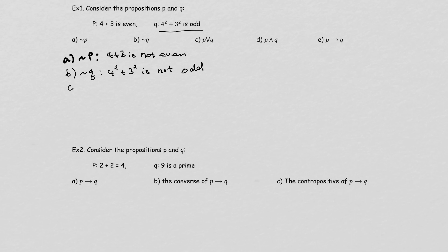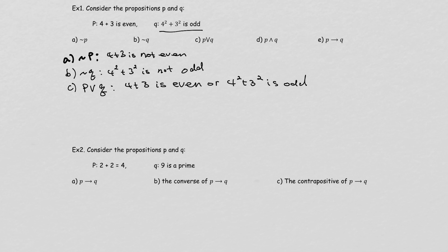What about P or Q? It means '4 plus 3 is even, or 4 squared plus 3 squared is odd.' Well, Q is true. Remember the table — the 'or' statement is true in everything except when both statements are false. Here, one statement is true, so P or Q is true.